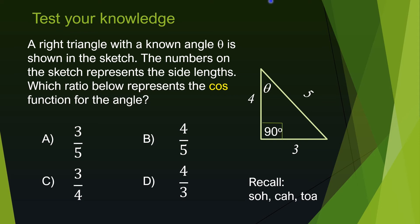Let's pause and use our knowledge of trig functions to answer a question. We want cosine of the given angle theta. From its definition, cosine is adjacent over hypotenuse. With theta as the angle of interest, the side labeled 3 is opposite and the side labeled 4 is adjacent. Based on the Pythagorean theorem, the hypotenuse is 5. So cosine theta equals 4 over 5 — answer B is correct.